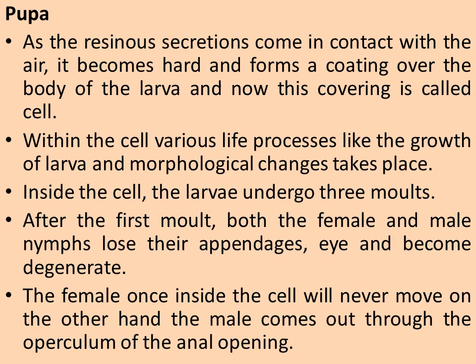The lac itself is formed when the resinous secretions come in contact with air and harden, forming a coating over the body of the larvae. This covering is called a cell. Within the cell, various life processes such as larval growth and morphological changes take place. Inside the cell, the larvae undergo three molts.